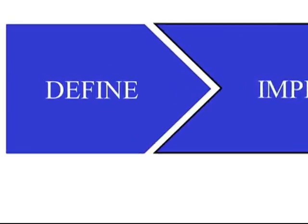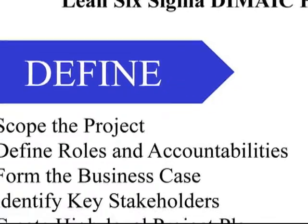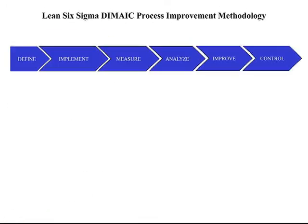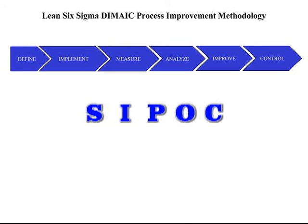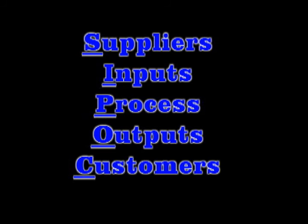Another useful tool to use during the process mapping activity is to make a chart that lists some of the key elements which will be needed for definition of each process step. This tool is referred to as a SIPOC. The SIPOC acronym stands for Suppliers, Inputs, Process, Outputs, and Customers.